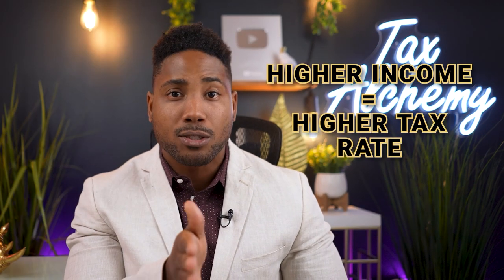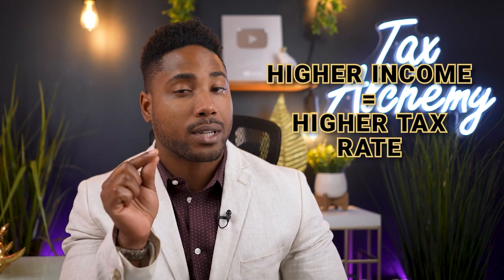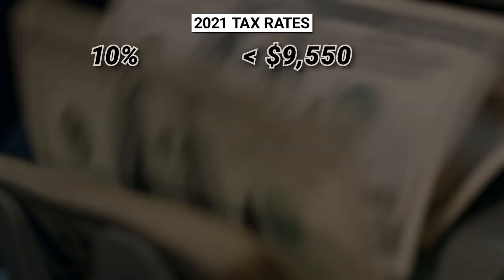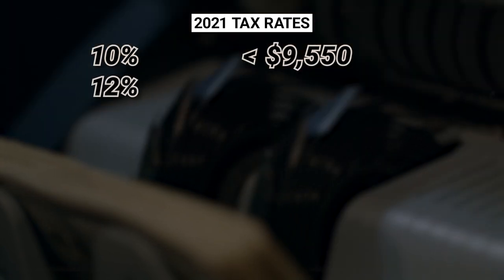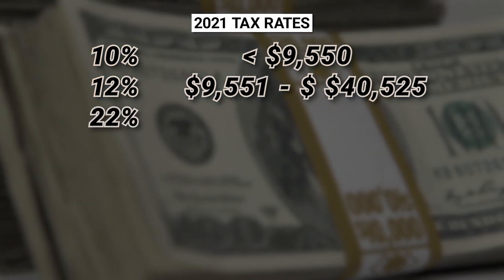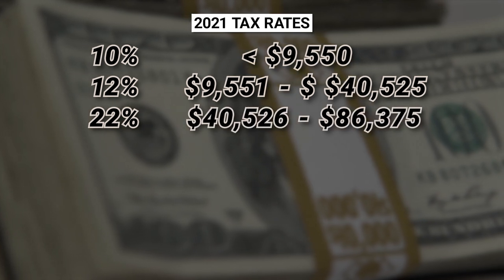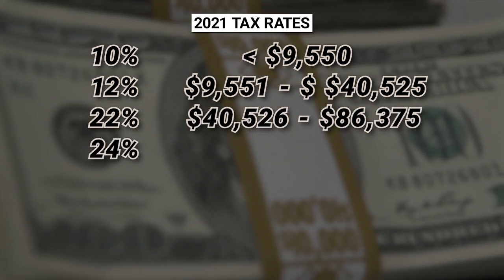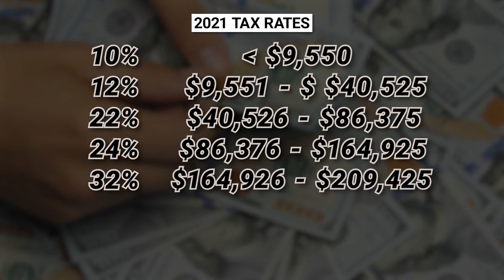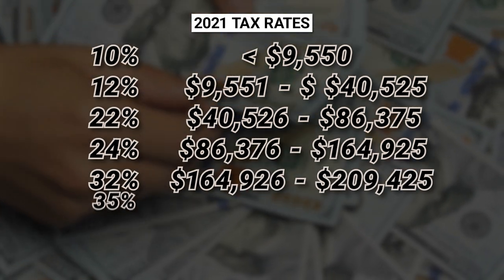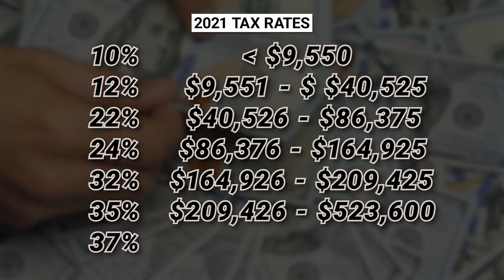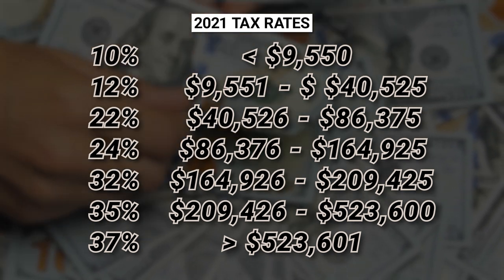The higher your income, the higher your tax rate will be — and the higher your short-term capital gains tax. For 2021, the rates are 10% for single filers making less than $9,950. Then the 12% bracket covers $9,551 to $40,525. The 22% bracket ends at $86,375, and the 24% bracket goes up to $164,925. The 32% bracket goes up to $209,425, and the 35% bracket goes up to $523,600.